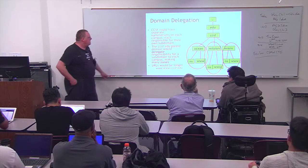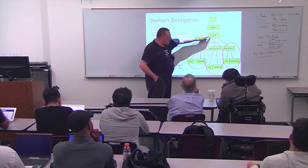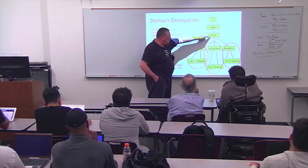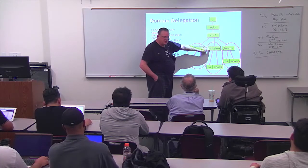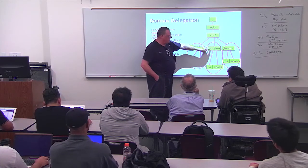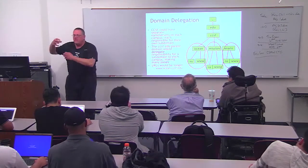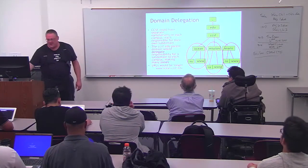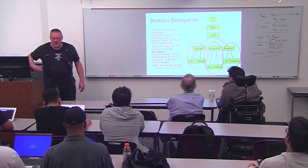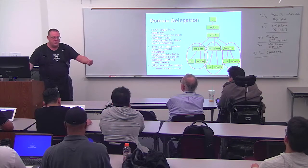If you go to CCSF's main name server and ask where www.mission.ccsf is, it will say 'I don't know, go ask mission,' and mission will tell you where it is. That's domain delegation — forwarding the request to another domain. We'll see next time how this can be used to make entertaining attacks on DNS by creating a long chain of forwarding, requiring many queries to resolve.